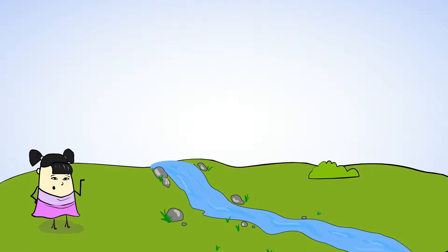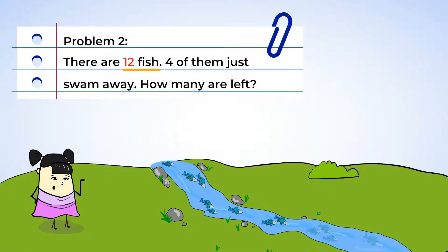Wow, look in the river! Twelve fish! But four of them just swam away. How many are left? Okay, so there were twelve fish when we first spotted them. And now there are fewer fish because some of them swam away.